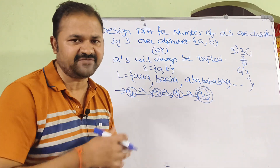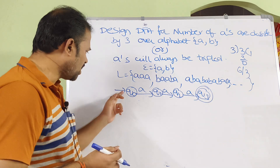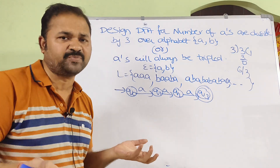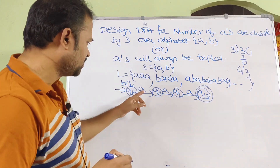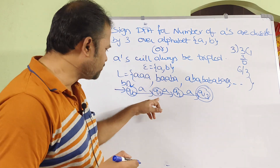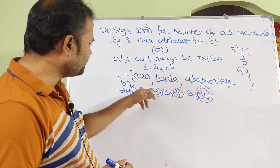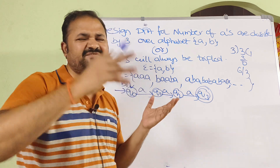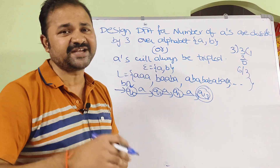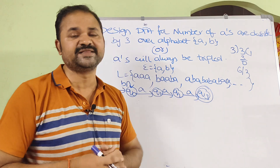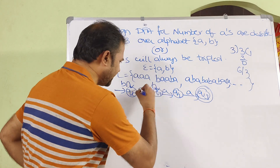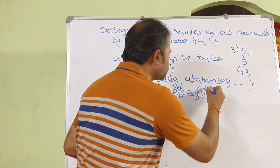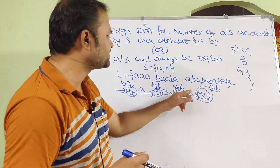Now let us check whether it is a valid DFA or not. It is not yet complete. On Q0 we have to handle B's — before the first A, we can have any number of B's, so we apply a self-loop on B at Q0. After 1 A on Q1, we also apply a self-loop on B, since between A's we can have any number of B's. Likewise on Q2, we also apply a self-loop on B. The only constraint is that the number of A's is divisible by 3.